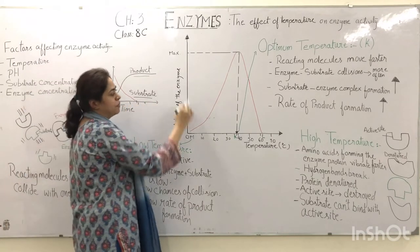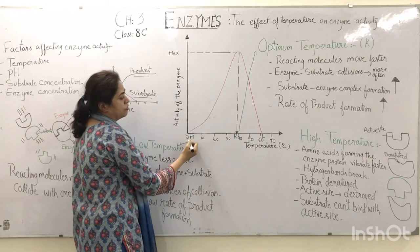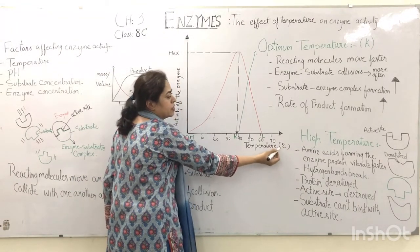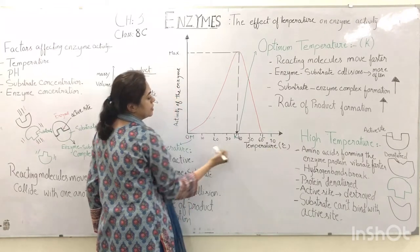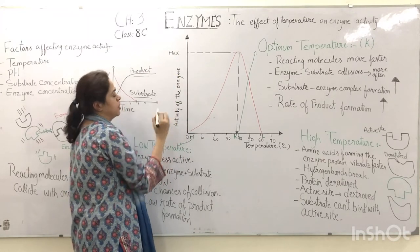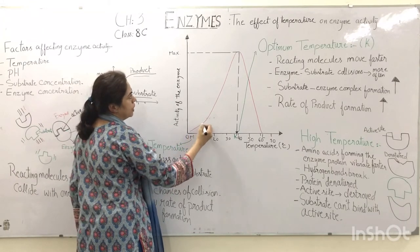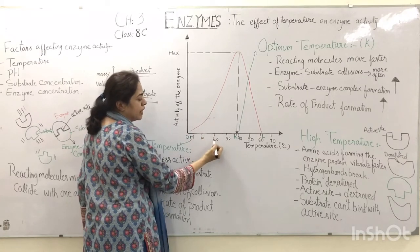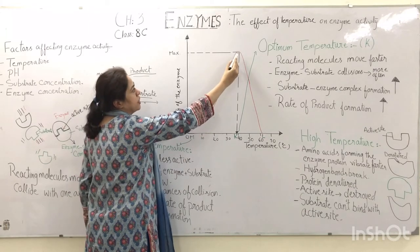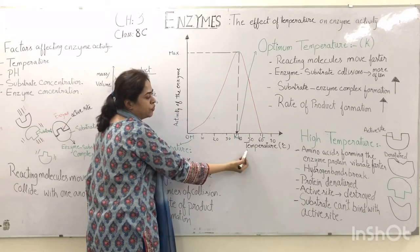Now we are going to see the effect of temperature on enzyme activity. In this graph we have plotted temperature along the x-axis in degrees centigrade, and the activity of the enzyme along the y-axis. The curve starts from zero and increases with every 10 degree rise in temperature, rising up to a maximum point, and then it decreases as the temperature further increases.